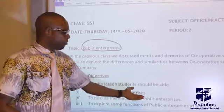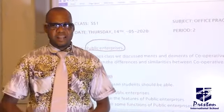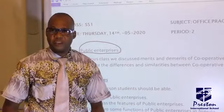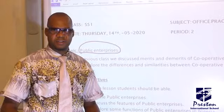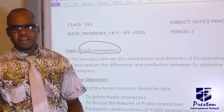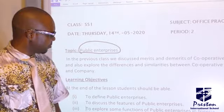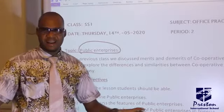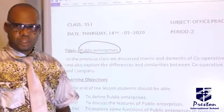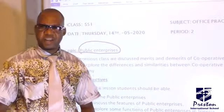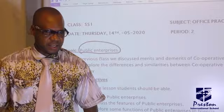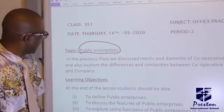A typical example is NEPA, and also the post office. Most post offices in Nigeria are owned, managed, and financed by the government. Telecommunication — NITEL — is owned by the government. The CBN is owned by the government. The police, the army, the navy, and the air force all fall under public enterprise. These are simple examples of public enterprise you can find in Nigeria.